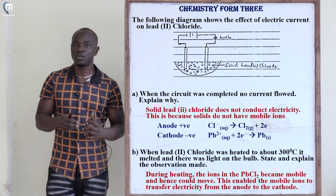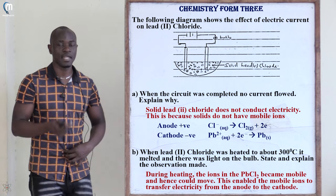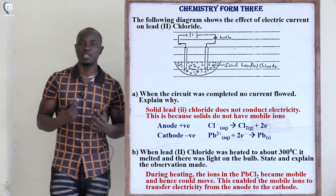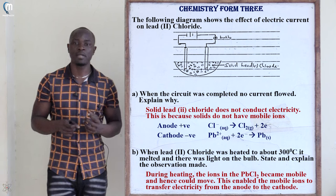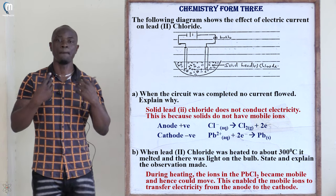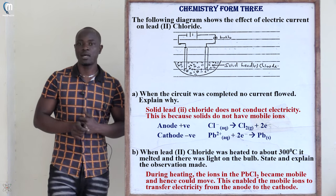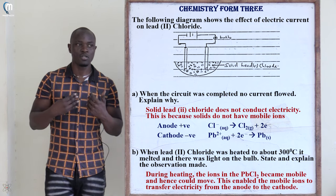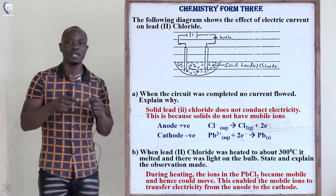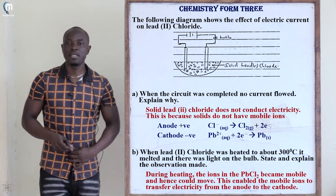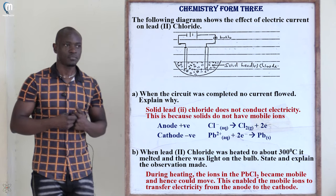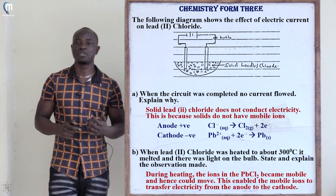Part B: when lead(II) chloride was heated to about 300°C it melted, and there was light on the bulb. Since lead(II) chloride was now in liquid form, it had mobile ions. These mobile ions are responsible for conducting electricity from the anode to the cathode, which resulted in the bulb lighting.